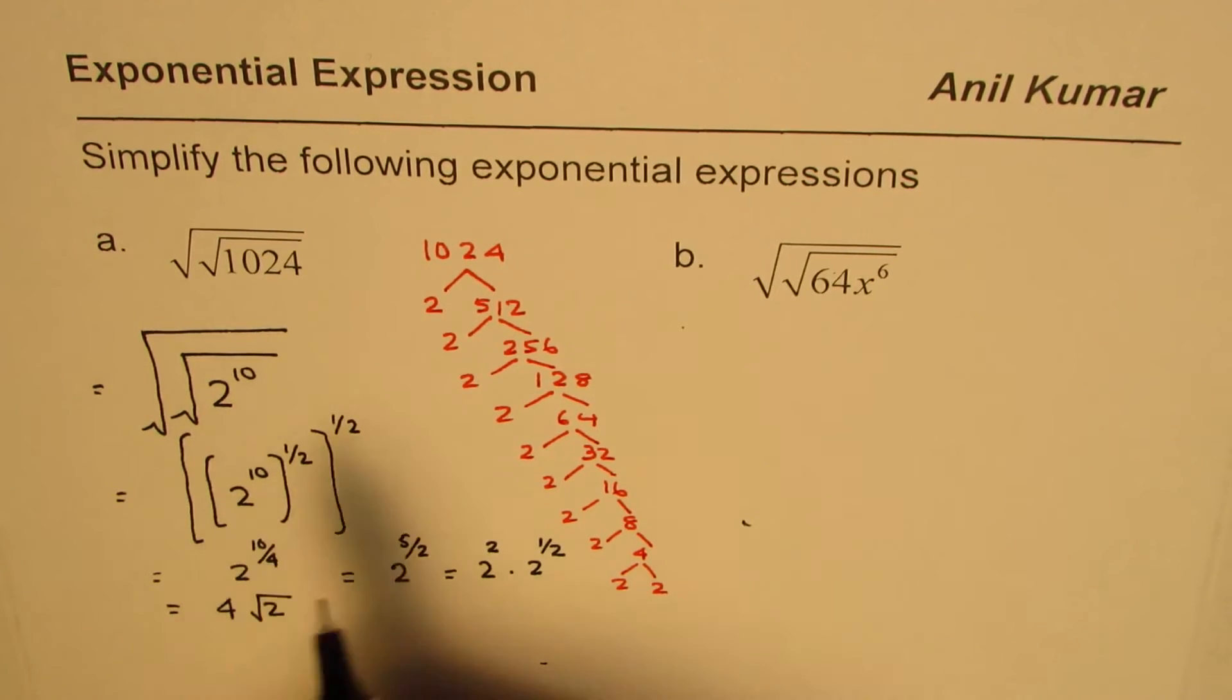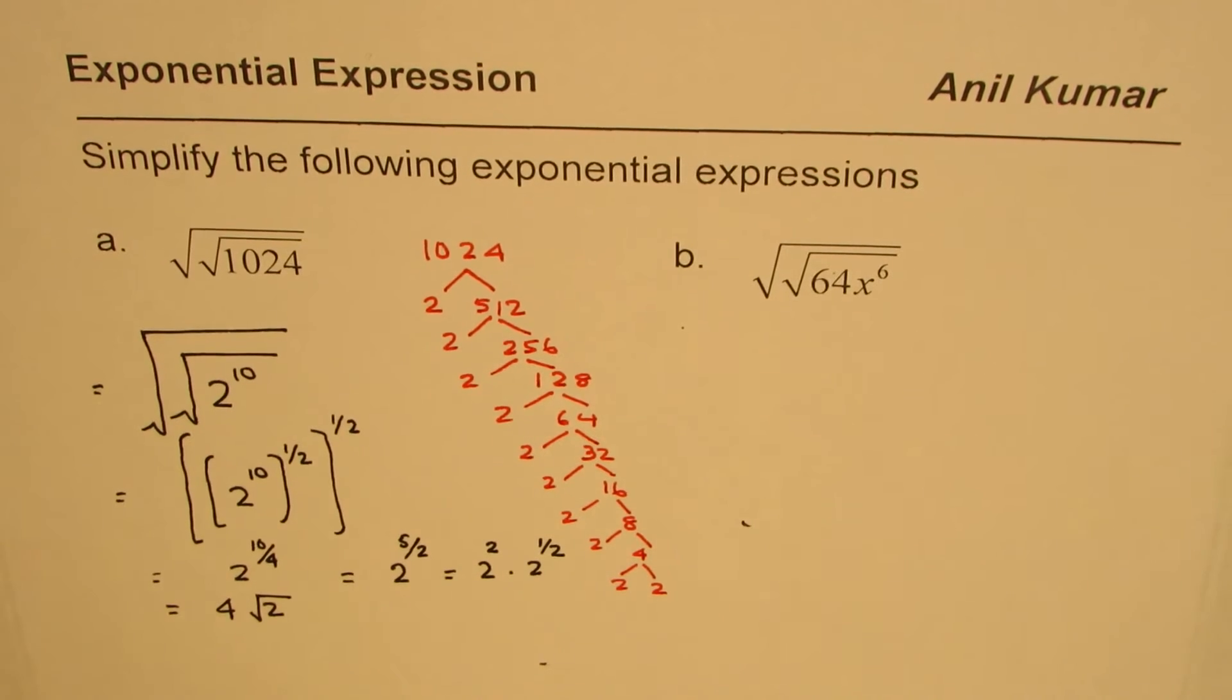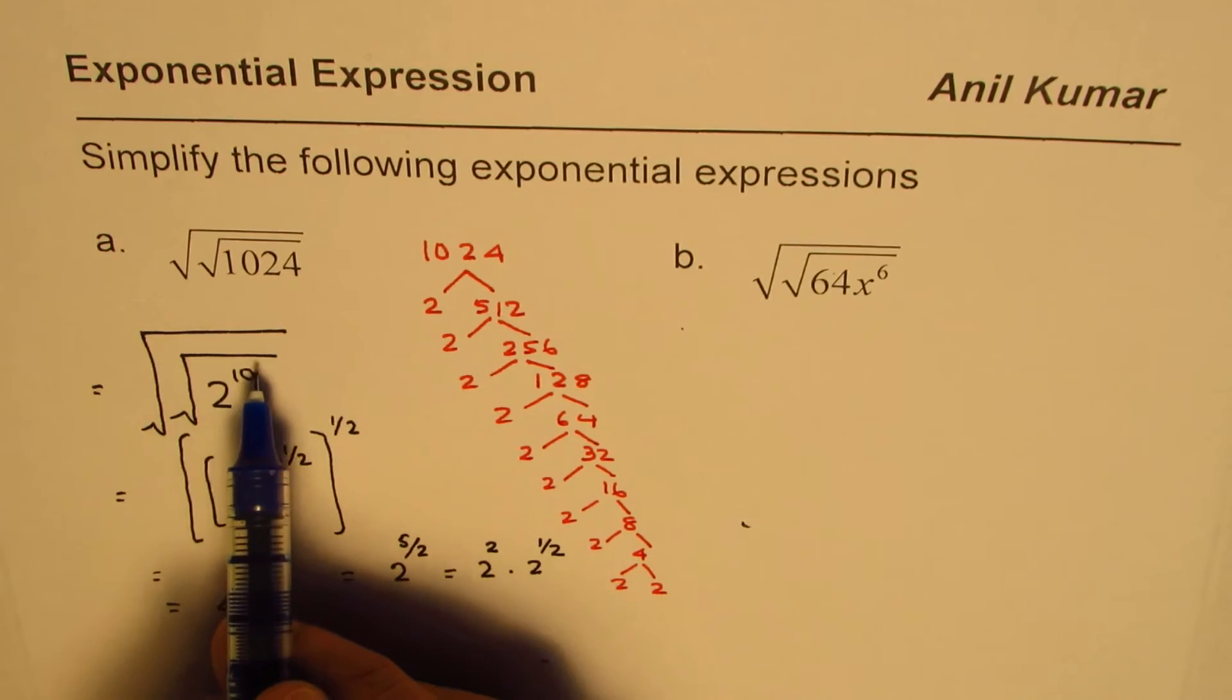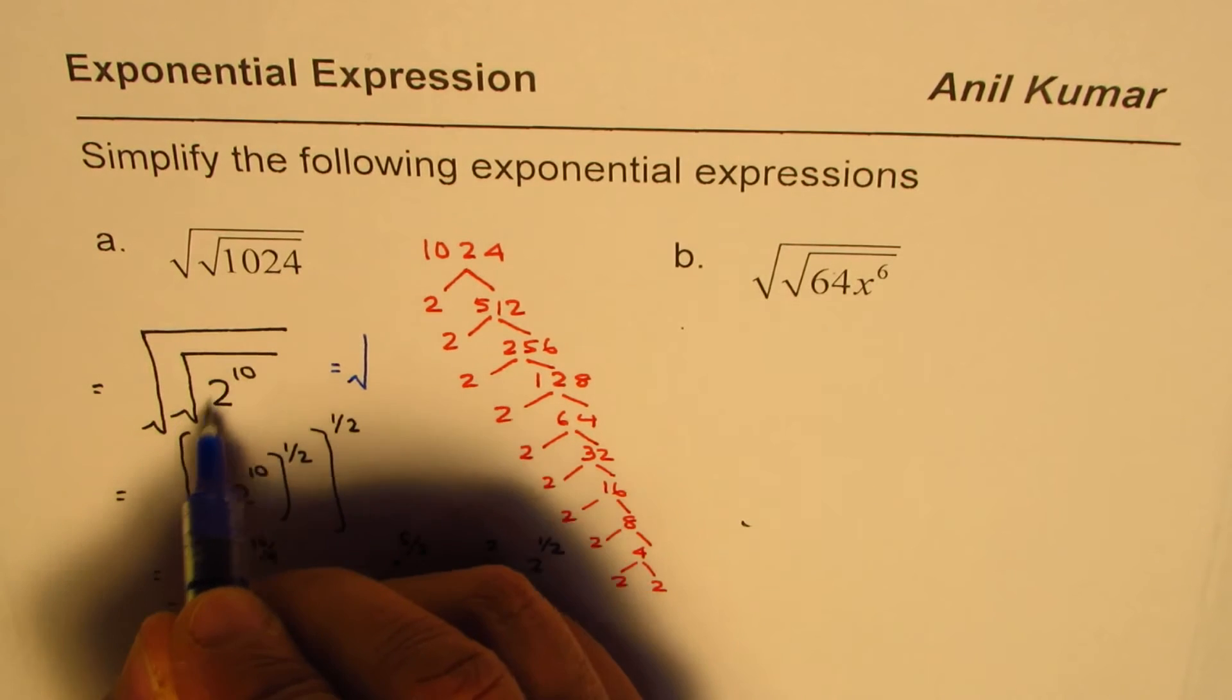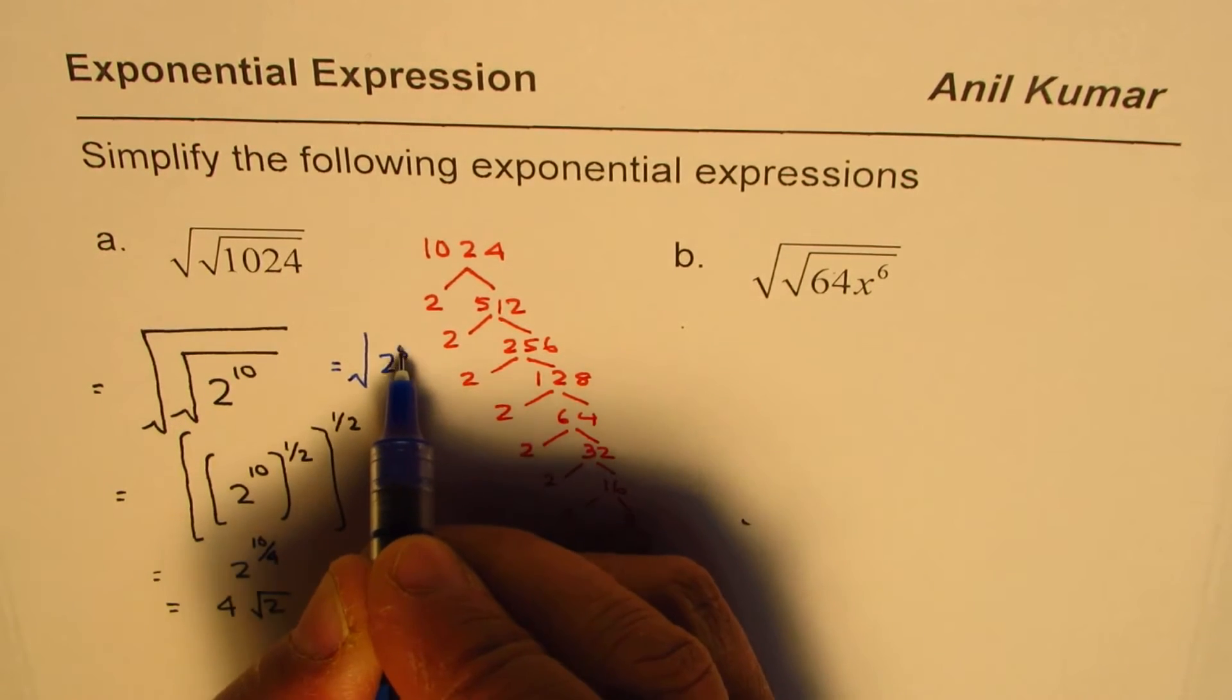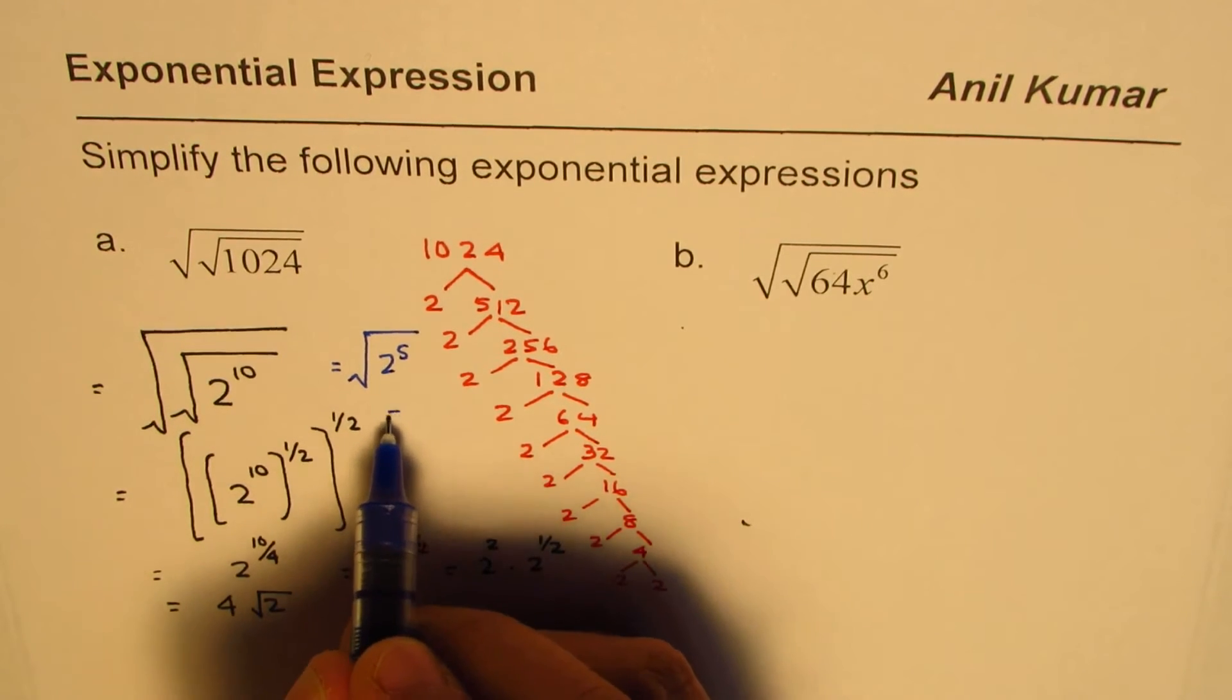You could have also written, at this stage—I'm just exploring different ways of doing it—if you write this as 2 to the power of 10, you can start from this square root and then you could have written this as square root of, solving the inside square root first, you get 2 to the power of 5.